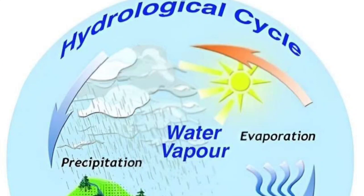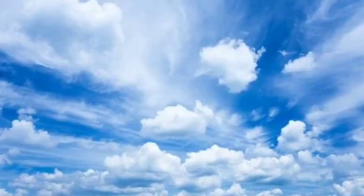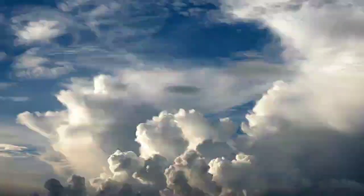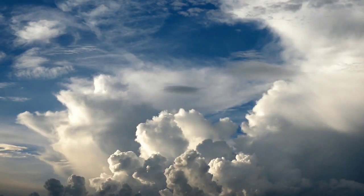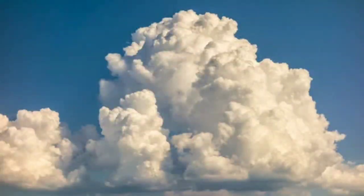Water is continuously added in the atmosphere in the form of water vapor by the process of evaporation. The water vapor present in the atmosphere gets converted into water droplets by the process of condensation. This condensation takes place at different levels in the atmosphere. When condensation takes place at higher levels, it leads to the formation of clouds, which are dense agglomerations or collections of water droplets at higher levels in the atmosphere.